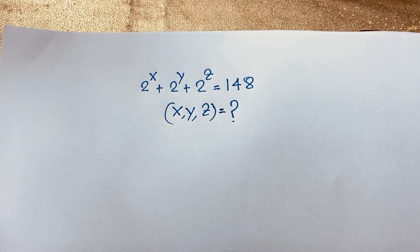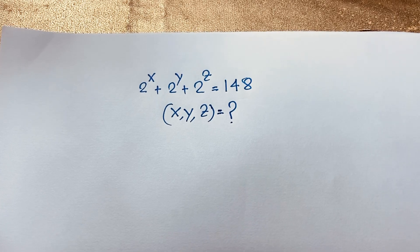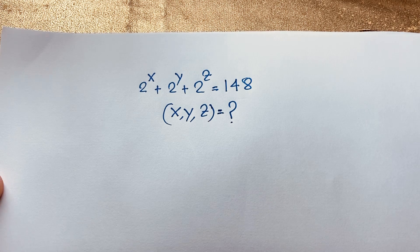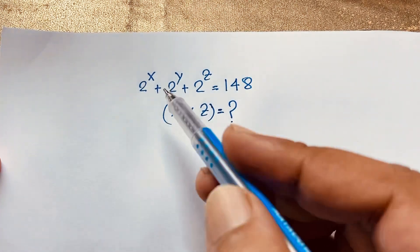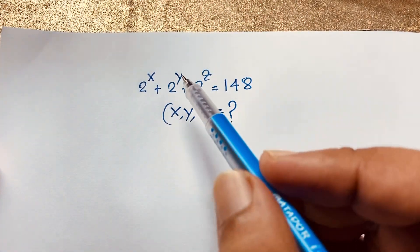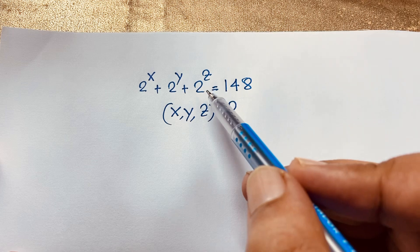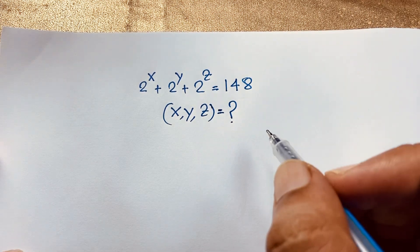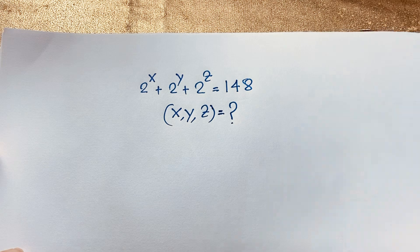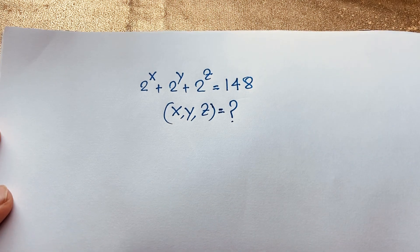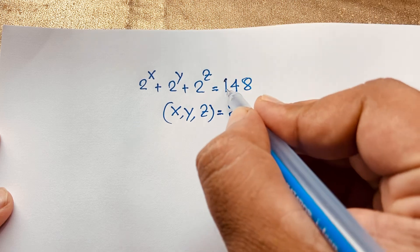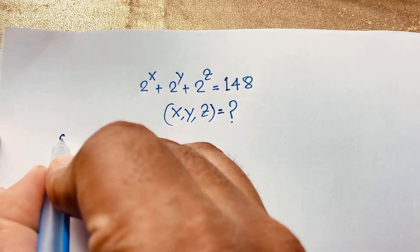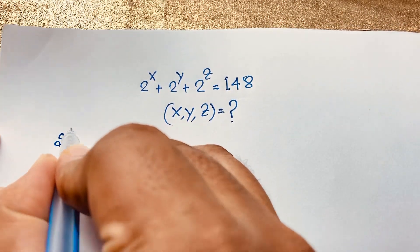Hello everyone, welcome to Rassler's Classroom. Today we have solved an interesting viral Math Olympiad question: 2 to the power x plus 2 to the power y plus 2 to the power z is equal to 148 — what is xyz? How to solve this interesting exponential Math Olympiad question? I will solve this question using an easy method.